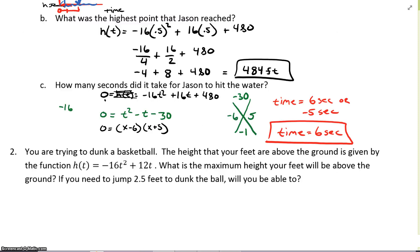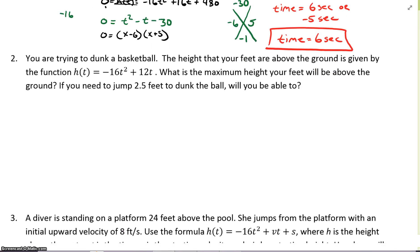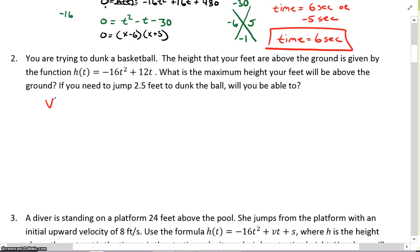Next question. You're trying to dunk a basketball. The height that your feet are above the ground is given by the function h(t) equals -16t² + 12t. What is the maximum height your feet will be above the ground? If you need to jump 2.5 feet to dunk the ball, will you be able to? So we've just got to find the maximum. We've just got to find the vertex of this thing. So my vertex, in terms of time, is going to be -b over 2a.